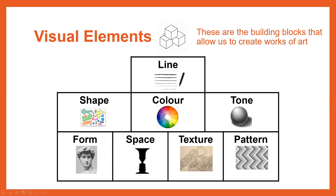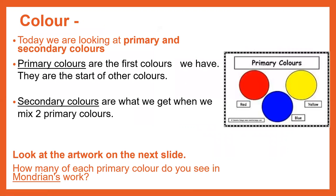In our Knowledge Organiser we have got all of these elements. Today we are going to be focusing on colour. These are the building blocks that allow us to create works of art. We're looking at primary and secondary colours. Let's find out what they are.